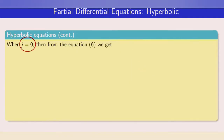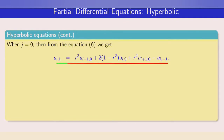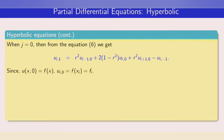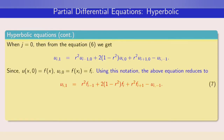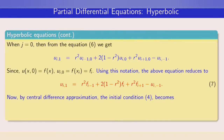When j = 0, from equation 6 we have: u(i, 1) = r²·u(i−1, 0) + 2(1−r²)·u(i, 0) + r²·u(i+1, 0) − u(i, −1). However, u(i, −1) is not a valid value, but it can be determined from the initial condition for the first derivative. Since u(x, 0) = f(x), we can write u(i, 0) = f(xᵢ), and thus u(i−1, 0), u(i, 0), and u(i+1, 0) are determined. Using this notation, the equation reduces to equation 7, but the last term u(i, −1) remains unknown.